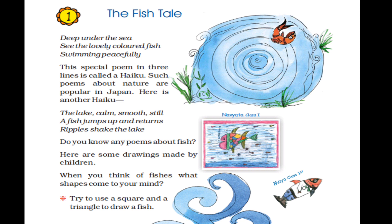Here in this chapter, very first they are talking about a haiku, that is a Japanese poem very popular in Japan. Generally, this poem is made up of three lines and that's why it's called a haiku. You can pay attention here: 'The lake calm, smooth, still. A fish jumps up and returns. Ripples shake the lake.'